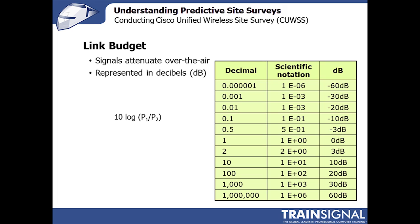Most RF engineers are comfortable with dB, but many people in an IT environment don't work with decibels all the time, so there's a reference chart here. A few things to always remember: a 3 dB gain means twice the power, a 10 dB gain means ten times the power, and so on. This table is a useful reference, and if you're going out on a site survey, the reason to take a calculator is that you'll occasionally need to convert between milliwatts and decibels.